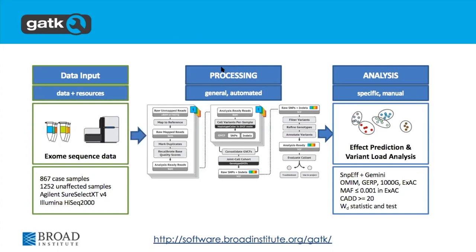There was one problem, which is that the exome sequence data was all access-restricted. We asked if even for testing we could get access to the data, but when you're working with human data, that's one of the drawbacks — in many cases, if the data is not consented for that, or if the investigators have reasons to restrict access, you just can't access the original data. That is a very common problem when trying to reproduce someone else's analysis in human genomics — a lot of the time, the original data is just not shareable or accessible, especially read data.